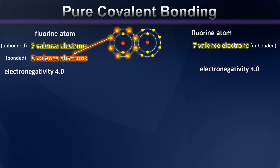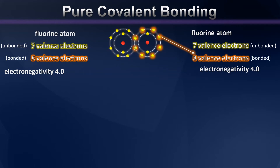Notice that in this depiction, the fluorine atom on the left believes that it has 8 valence electrons, whereas the fluorine atom on the right also believes it has 8 valence electrons. So at the moment, they both believe they've satisfied the octet rule. This is possible because two electrons are actually shared between them and count for each of the fluorine atoms' valence shells.